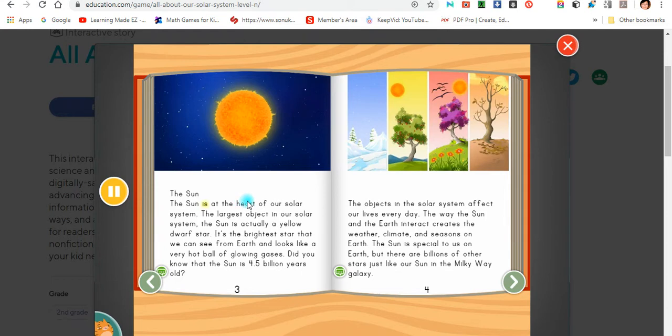The Sun. The sun is at the heart of our solar system, the largest object in our solar system. The sun is actually a yellow dwarf star. It's the brightest star that we can see from Earth and looks like a very hot ball of glowing gases. Did you know that the sun is 4.5 billion years old?